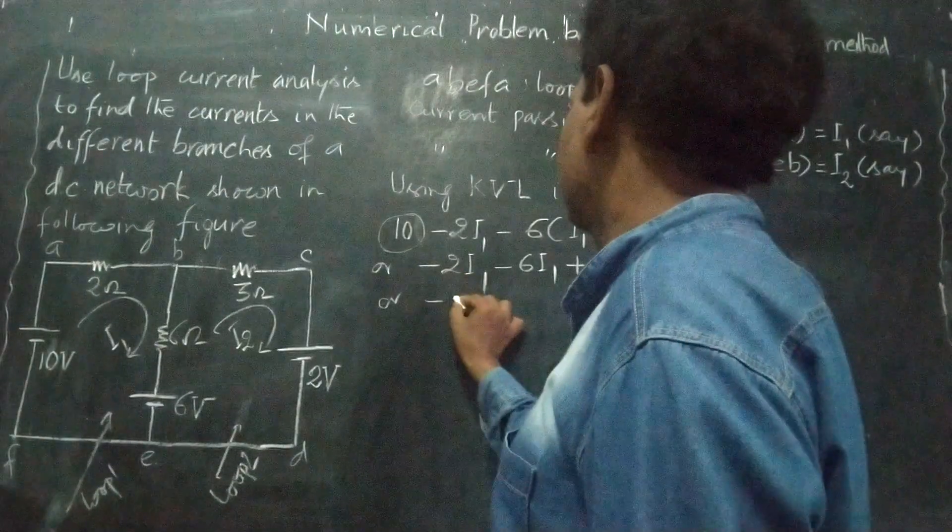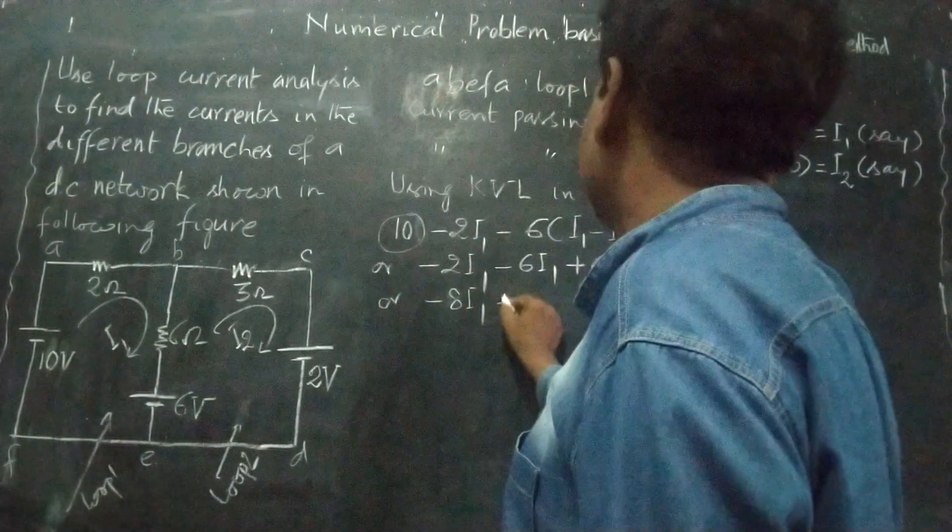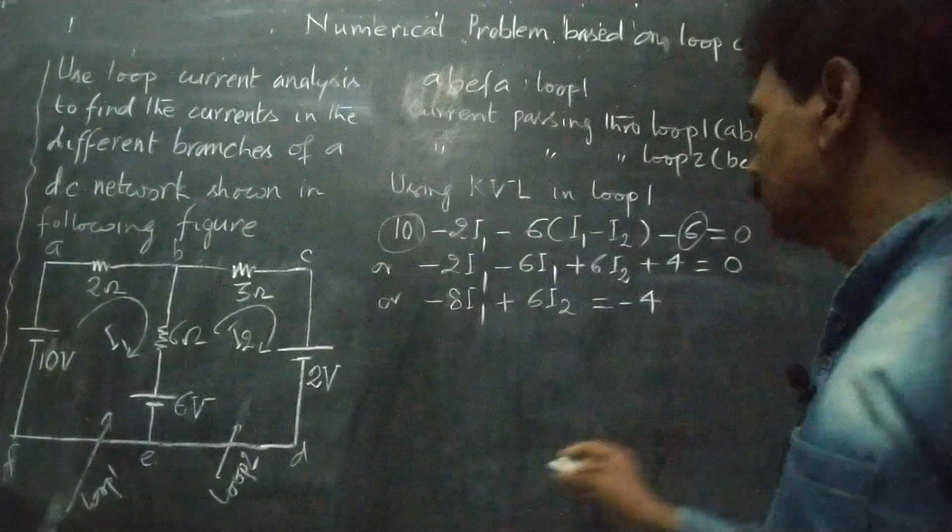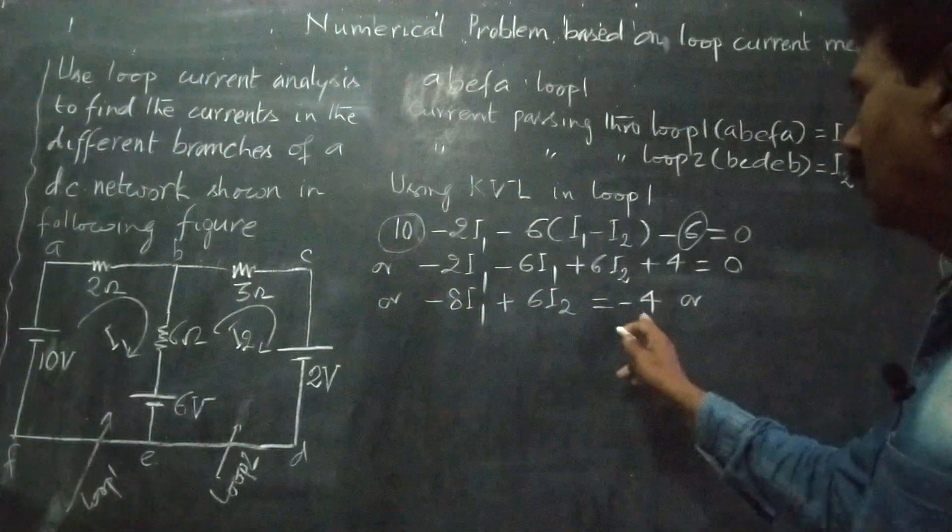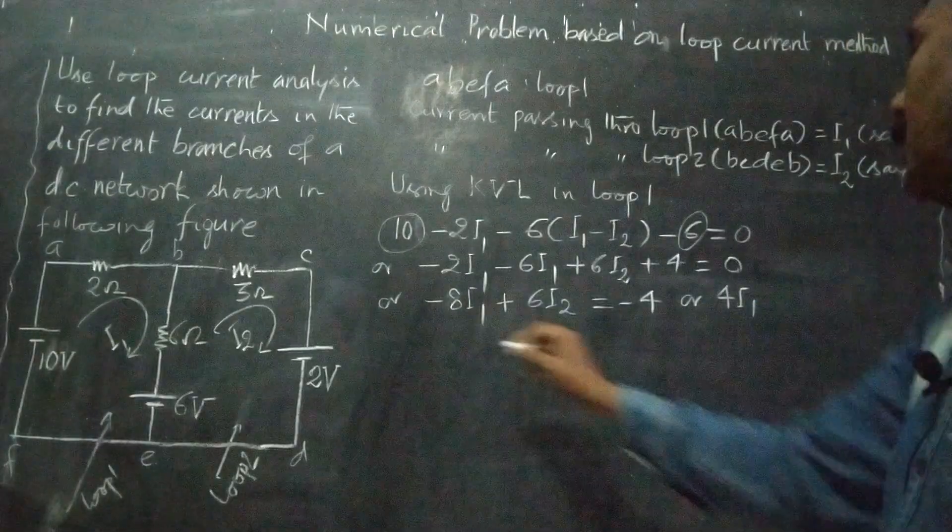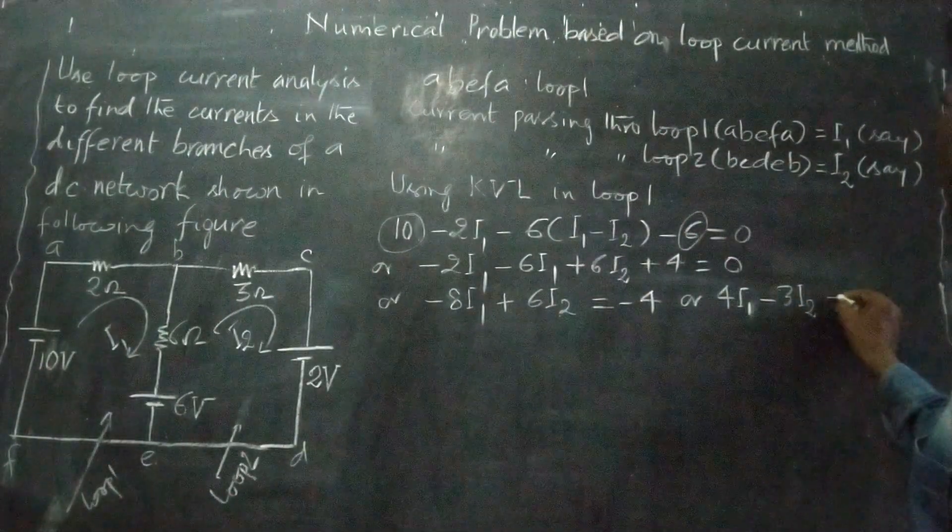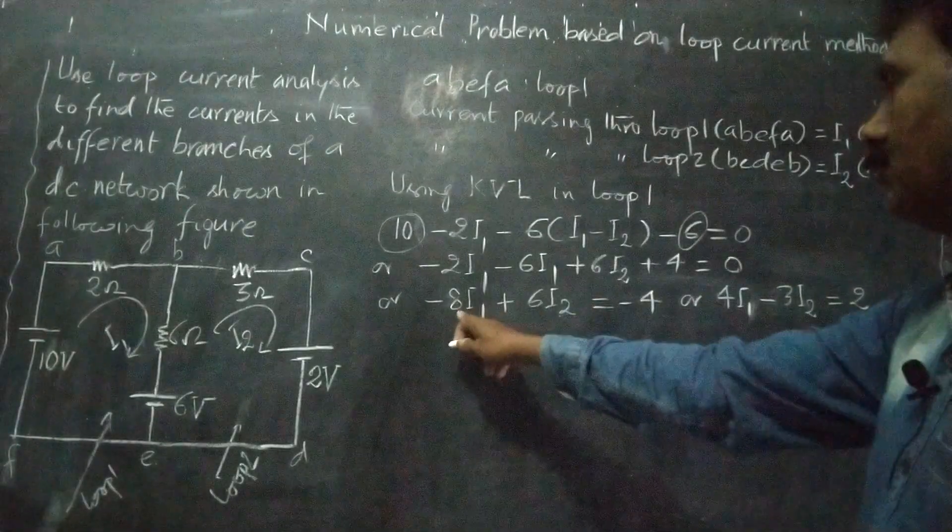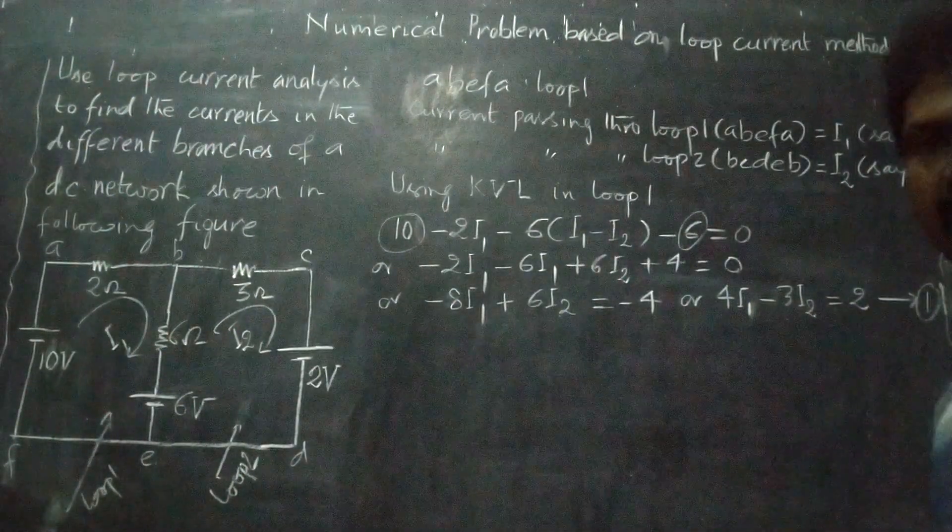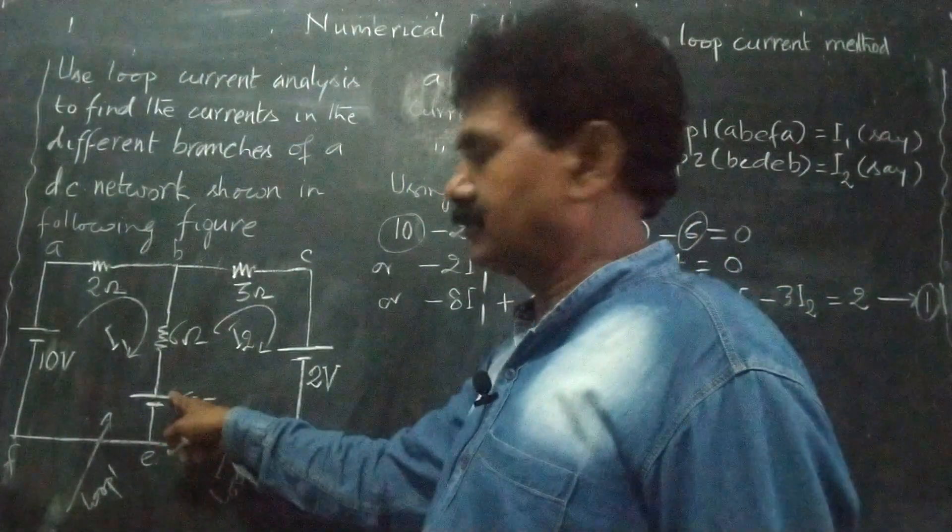10 minus 6 volt. Then this becomes minus 2, minus 2 minus 6, that is minus 8I1 plus 6I2 equal to, take it here, minus 4. Then let us take common here, 2. Minus 2, then this will be 4I1. 2 common taken, 4I1 minus 3I2. And this one will be 2. Thus minus 2 common taken, so 4I1, minus 3I2 equal to 2. This is equation 1.